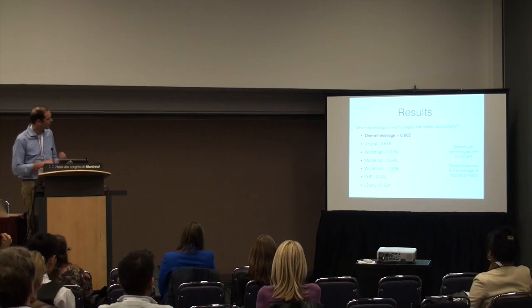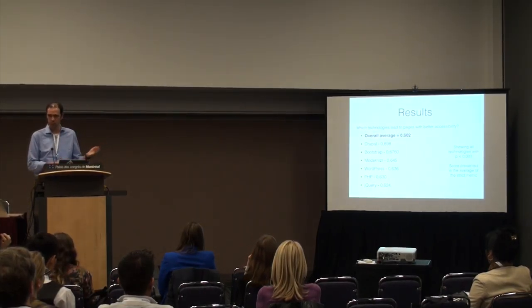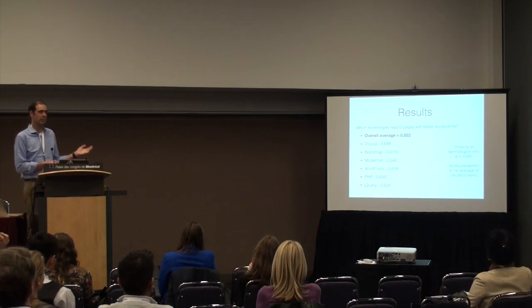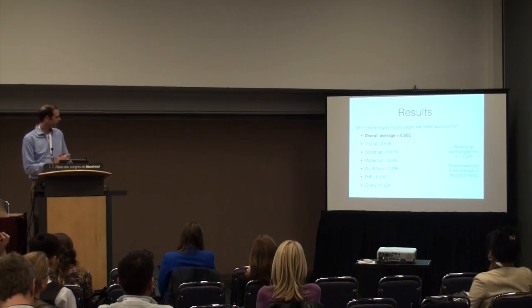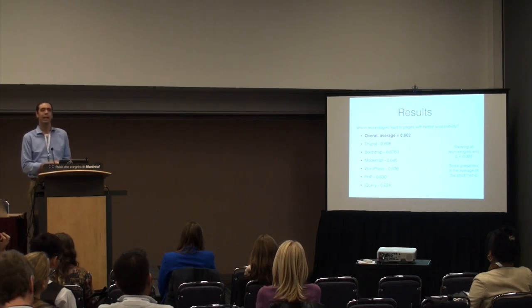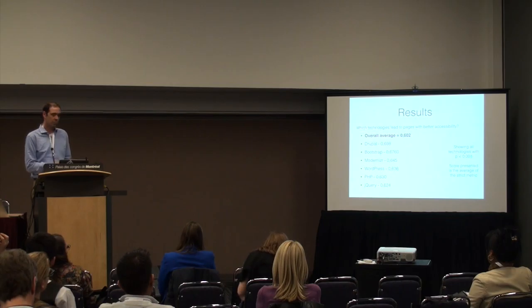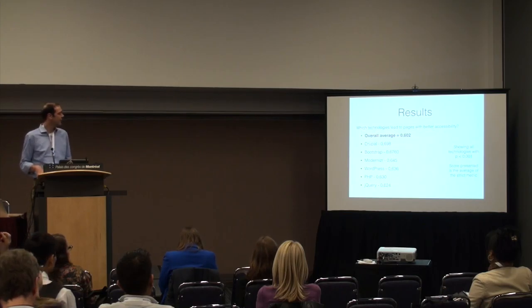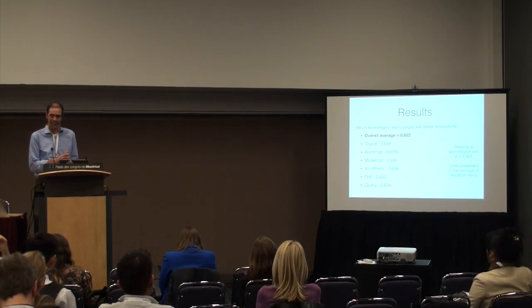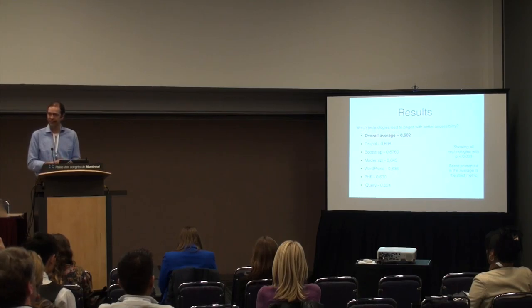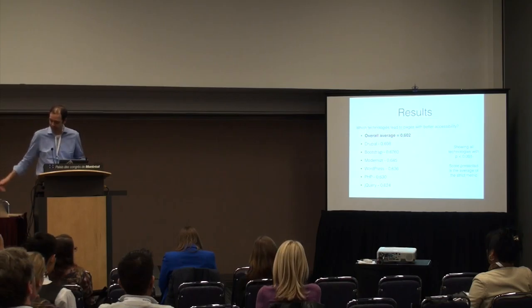What results did we find? The overall accessibility for almost 1,700 pages using the strict metric was 0.602. Six technologies were significantly above that value: Drupal was highest at 0.698, then Bootstrap at 0.676, Modernizr at 0.645, WordPress at 0.636, PHP at 0.630, and jQuery at 0.624.